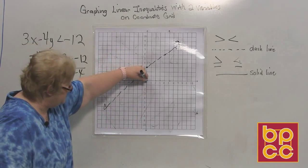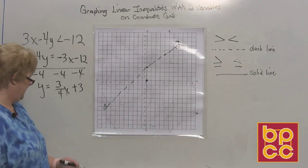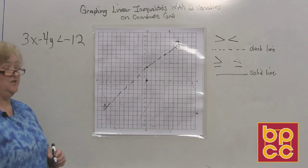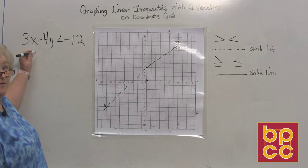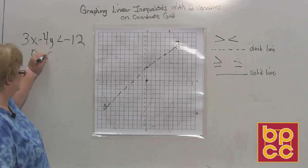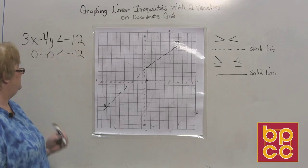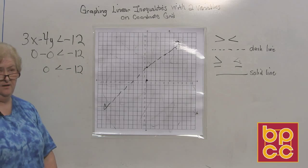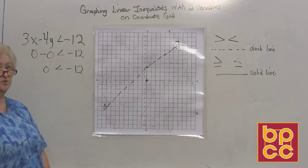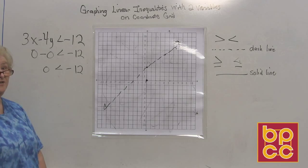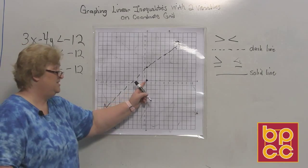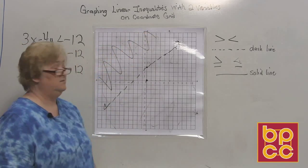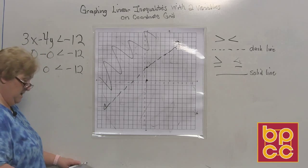Now I'm going to test (0, 0) for truth or a lie. Going back to the original: 3 times 0 is 0, minus 4 times 0 is 0, less than negative 12. That says 0 is smaller than a negative number — 0 is not smaller than a negative number; negative numbers are smaller than 0. So (0, 0) has fibbed to us, which means it does not get shaded. None of this area gets shaded; I'm going to shade everything on the other side of the boundary line.